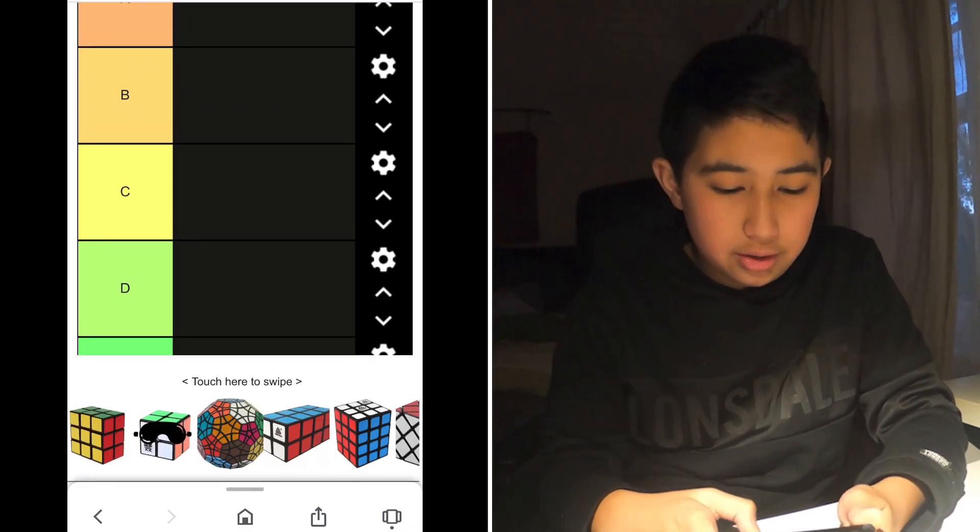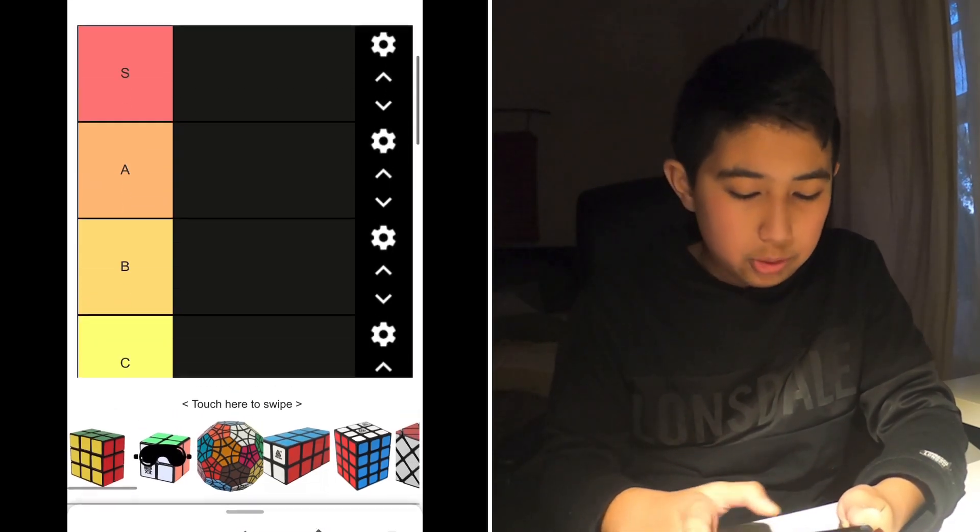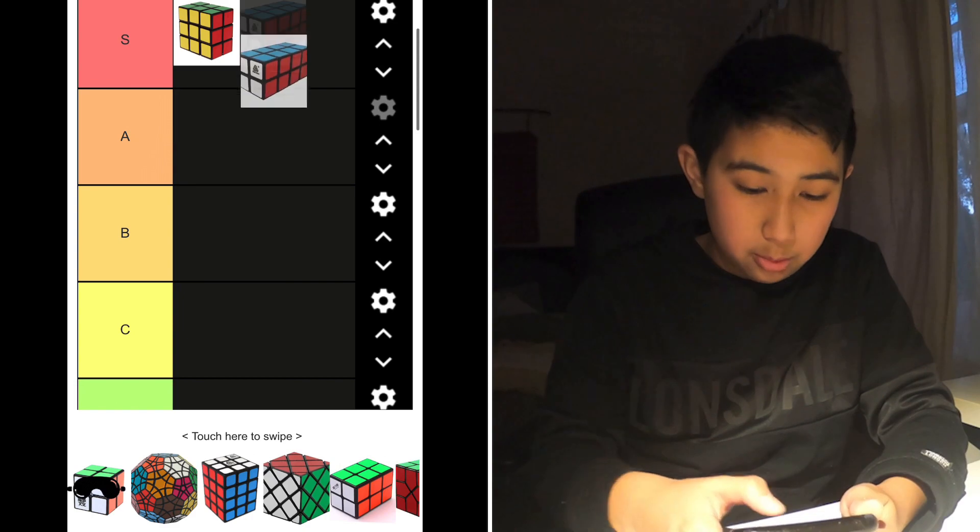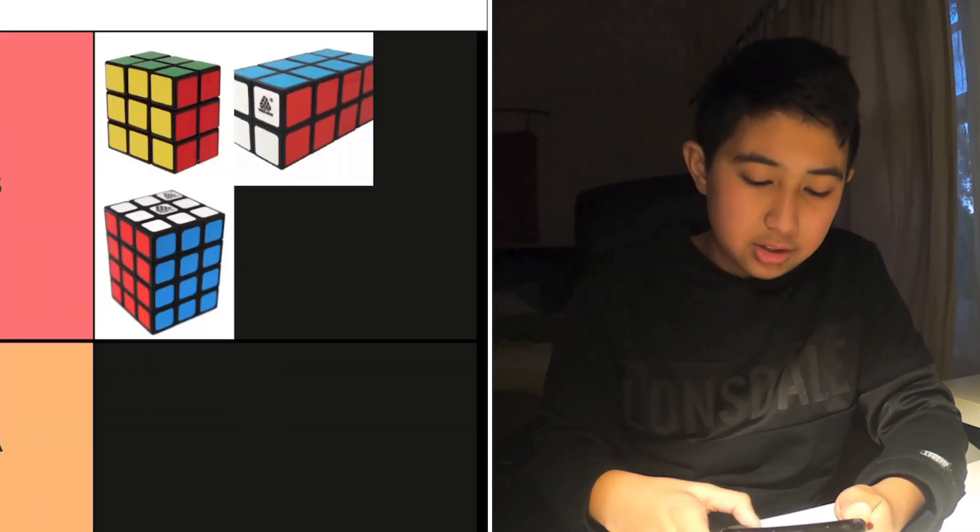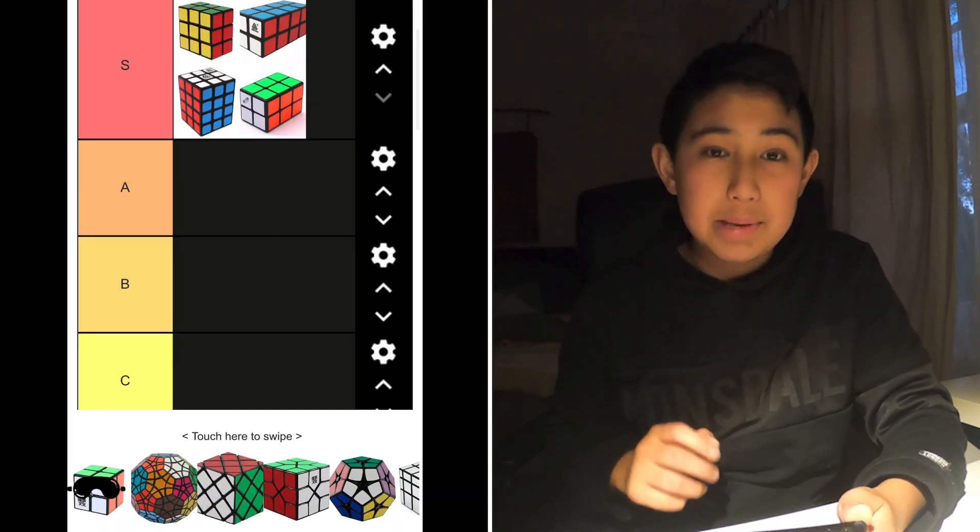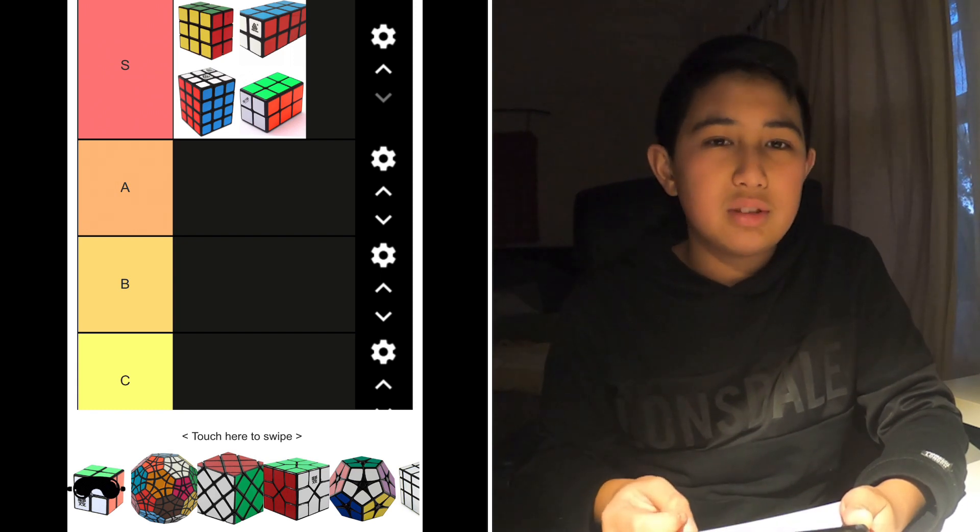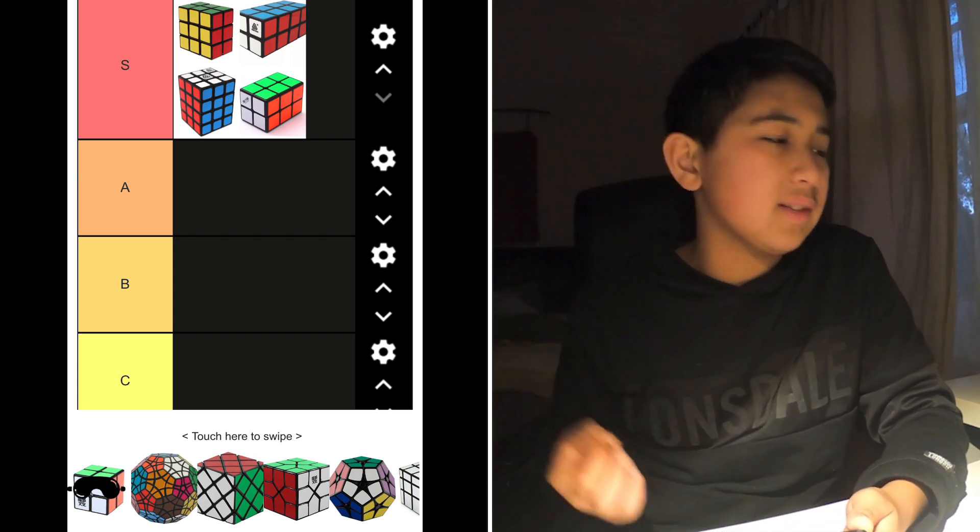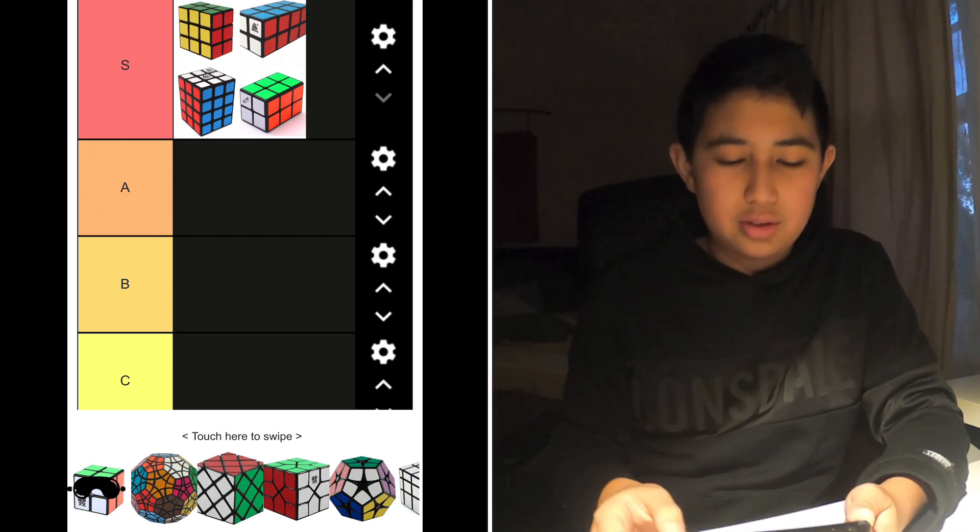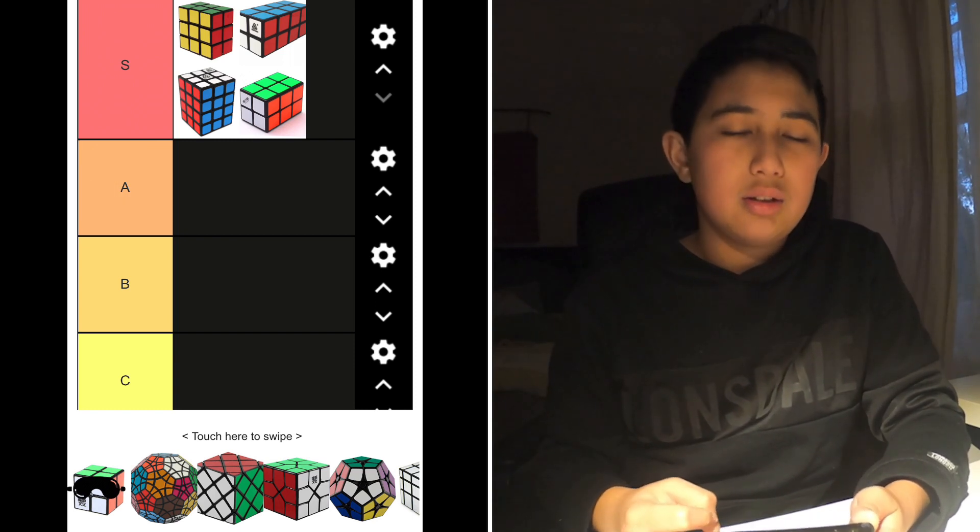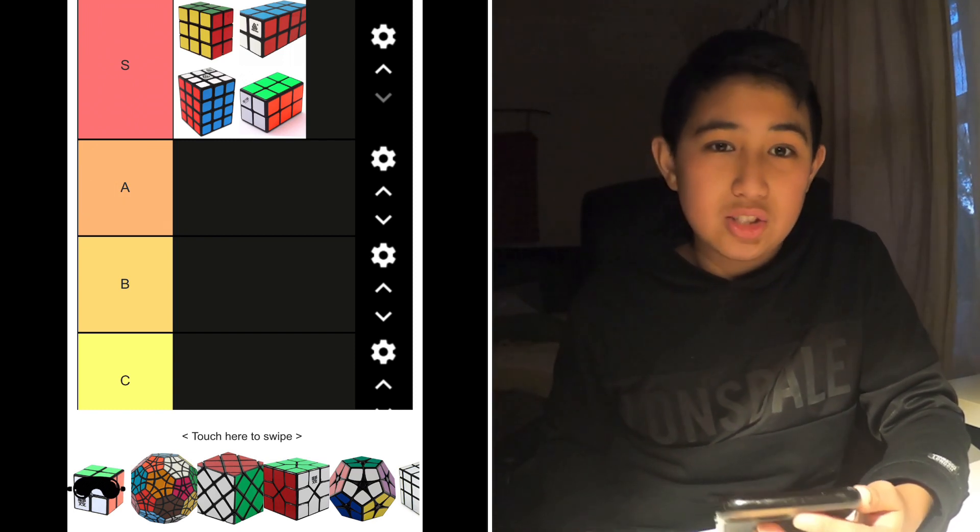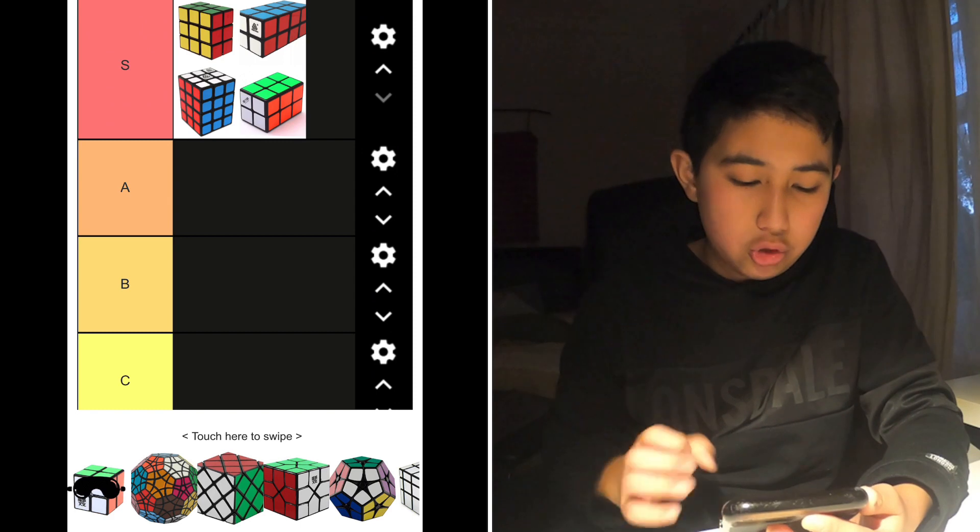So I'll do it anyway because I think it's pretty cool. All right, 2x3x3. Actually, you know what, let's just go rank all the cuboids. They all go in S tier. Seriously, if you haven't tried the cuboid, you are missing out. They're just so cool. It's like a shapeshifter, some of them, but they come in all different shapes and sizes which is really cool.